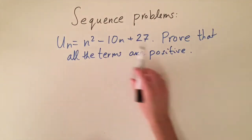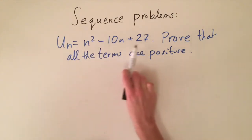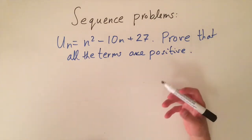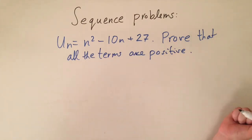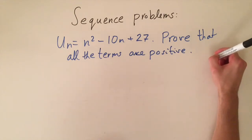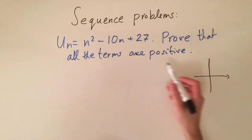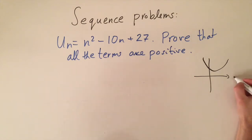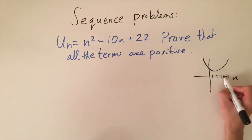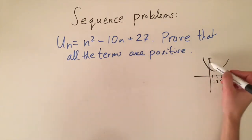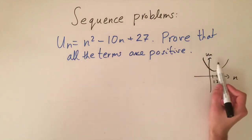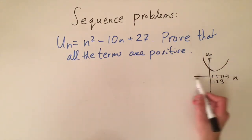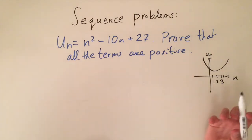For the next problem, we are given a sequence generated by a quadratic formula, and the problem is to prove that all the terms in the sequence are positive. A bonus question is to find the smallest term. We can visualize this quadratic as a parabola on a plane, where the horizontal axis represents the term number n and the vertical axis represents u(n). We want to prove that the curve stays above the horizontal axis.